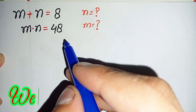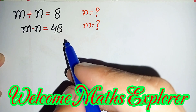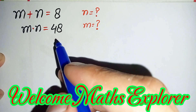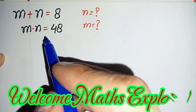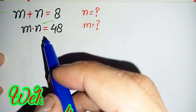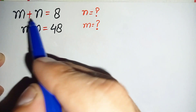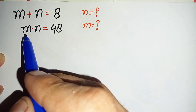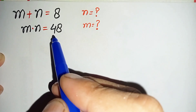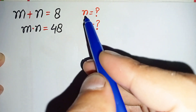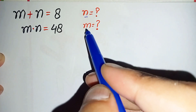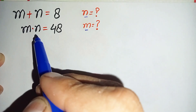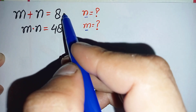Hello everyone, welcome to Math Explorer. In this video I'm going to solve a nice algebra math problem: m plus n is equal to 8, and m times n is equal to 48. We will find the values of n and m.